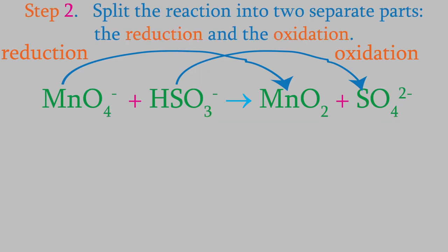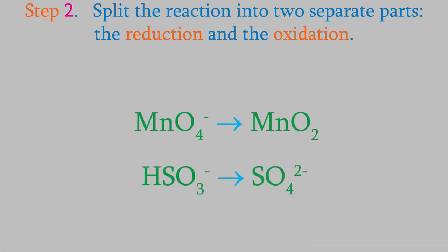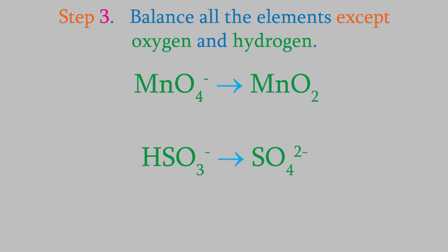Now we can finish balancing the reaction. Step 2 tells us to separate this reaction into two smaller half-reactions. One involves only the reactant and product of the reduction, and the other involves the reactant and product in the oxidation reaction. Next is step 3, in which we balance all the elements other than oxygen and hydrogen in each reaction. In the reduction reaction, the only element other than oxygen and hydrogen is manganese, and the manganese is already balanced. In the oxidation, the only element aside from oxygen and hydrogen is the sulfur, and this one's already balanced too.